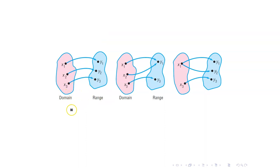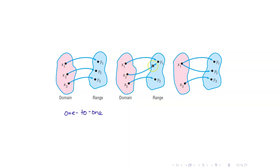For the first one, this is one-to-one. Every distinct element in the domain goes to distinct elements in the range. How about the second example? Notice that x1 and x2 went to the same image y1.